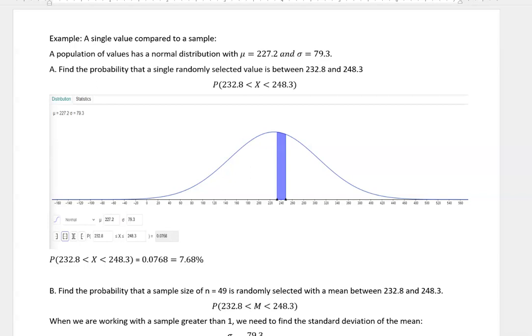So in this problem we have a population of values that's normally distributed with a mean of 227.2 and a standard deviation of 79.3, and we're supposed to find the probability that a single randomly selected value is between 232 and 248.3.